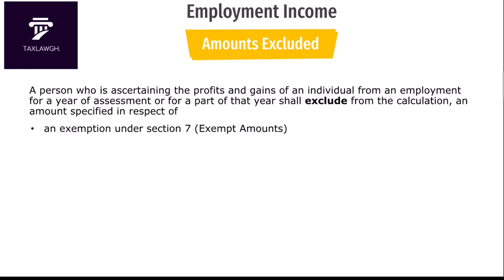Section 7 is the section that covers exempt amounts. It is the same section that says the President of Ghana is exempt from income tax, that income from cocoa of a cocoa farmer is exempt, and that a pension is exempt from income tax generally. Section 7 gives a list of income items that are exempt from income tax within the laws of Ghana. If an employee earns any income listed under Section 7, that income is also exempt under employment income taxation and should not be included when determining the employee's employment income.